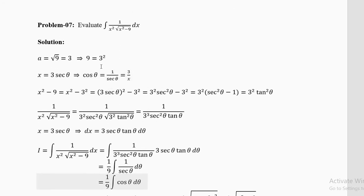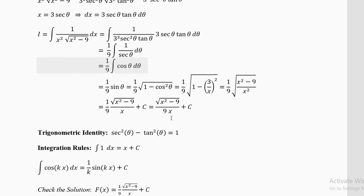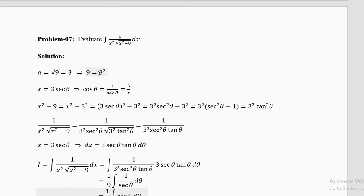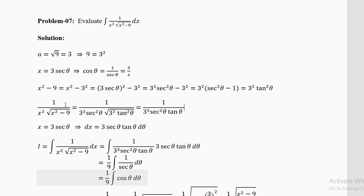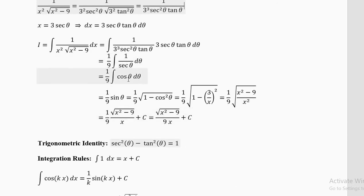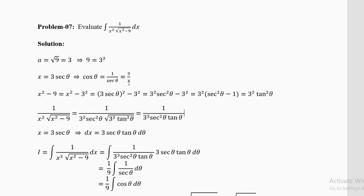Key point: don't prematurely calculate sin⁻¹, cos⁻¹, or sec⁻¹ on the first line. Wait until you finish integrating, then decide what you need. Here we only needed sinθ, obtained from cosθ = 3/x using the identity sinθ = √(1 − cos²θ). Avoid extra calculations — they consume time and energy.